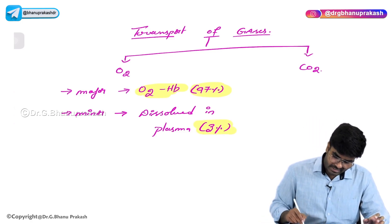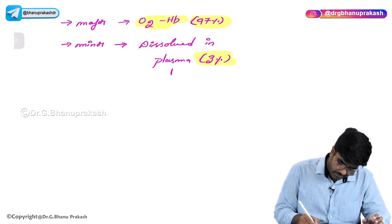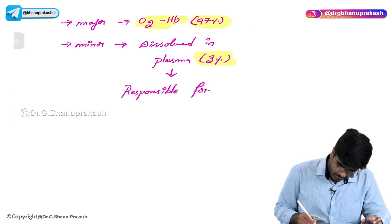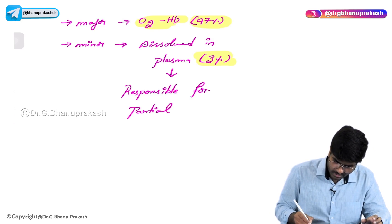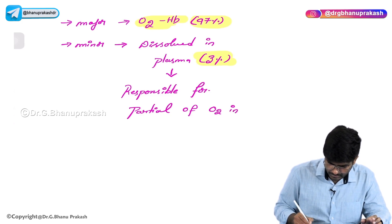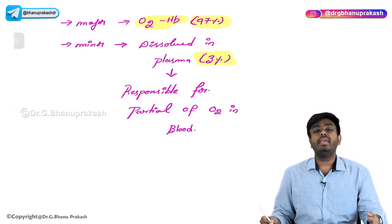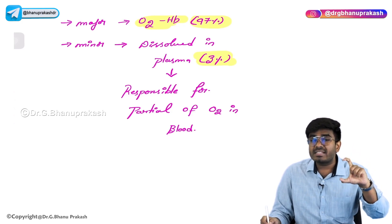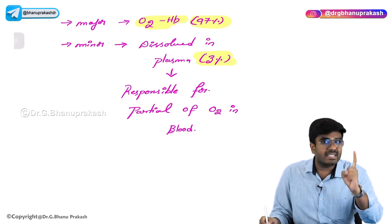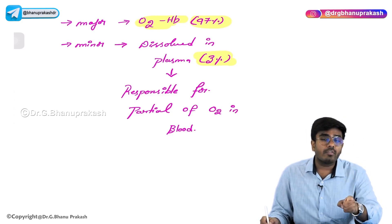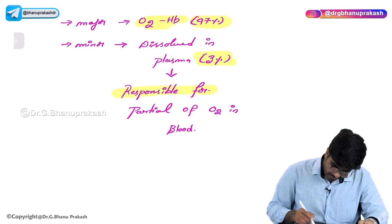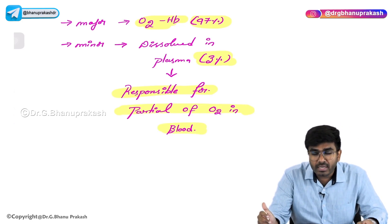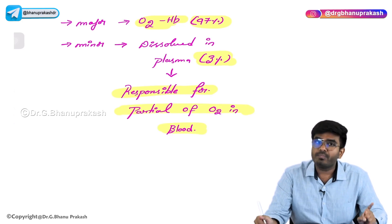An important point: this dissolved oxygen is the one responsible for the partial pressure of oxygen in the blood. The partial pressure of oxygen in the blood — PaO2 — is not because of the oxyhemoglobin; it's because of the dissolved oxygen in the plasma. This is a very important point.